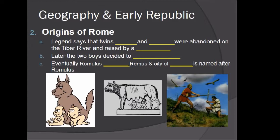Later, the two boys decided to build a city. However, they couldn't agree on certain things, and eventually Romulus kills Remus, and the city of Rome is named after Romulus.